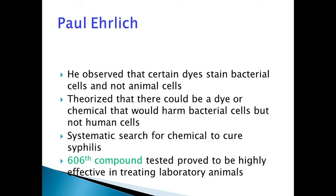The first scientist who made the breakthrough of antimicrobial agents is Paul Ehrlich. He observed that certain dyes stain bacterial cells and not animal cells — selective chemical staining. He theorized that there could be a chemical that would harm only bacterial cells but not human cells, and a systematic search was put forth to find chemicals to cure syphilis. Of all the compounds he tested, the 606th compound proved highly effective in treating laboratory animals. You can see the enormous effort scientists put in to find the medicines we easily get from medical stores nowadays.